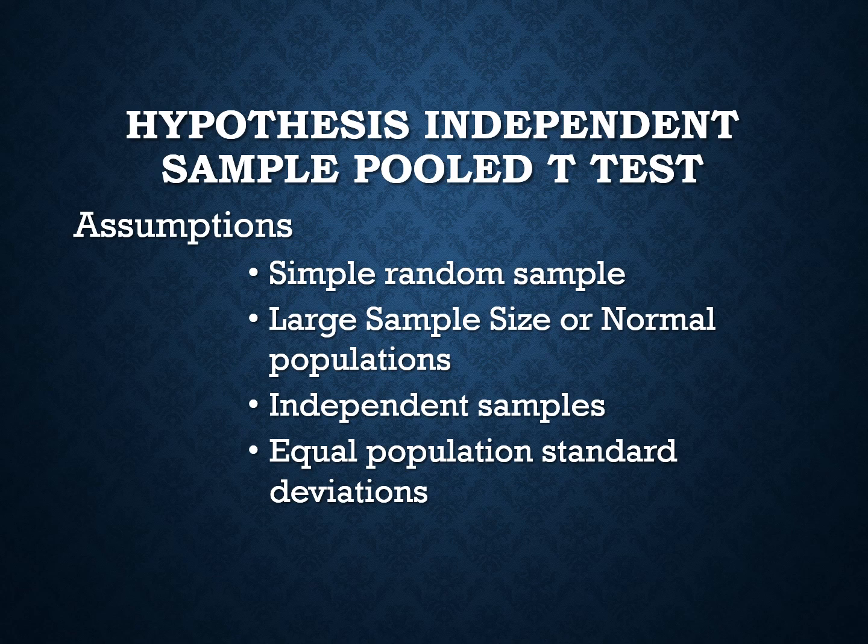In the independent sample t-test there are two types of tests: pooled t-test and non-pooled t-test. In the pooled t-test we assume equal population standard deviations, and in the non-pooled t-test we have unequal population standard deviations. The assumptions for the pooled t-test are: simple random sample, large sample size or normal population, independent samples, and equal population standard deviations.